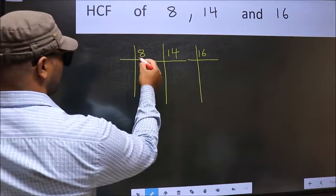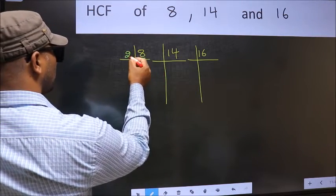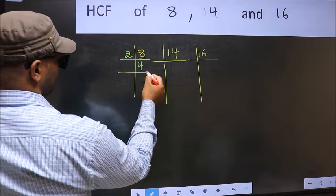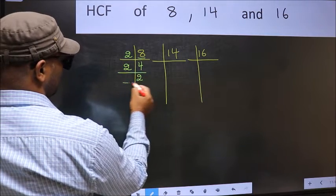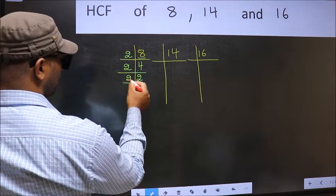Now here we have 8. 8 is 2 times 4. 4 is 2 times 2. Now 2 is a prime number so 2 times 1 is 2.